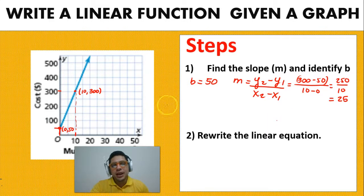So now that we have found our slope, we can actually go into step number 2, which is rewriting the linear equation. You have to remember that the linear equation is going to be equal to y equals mx plus b. Now y is going to be equal to the value of m that we calculated, which is 25, multiplied by x.